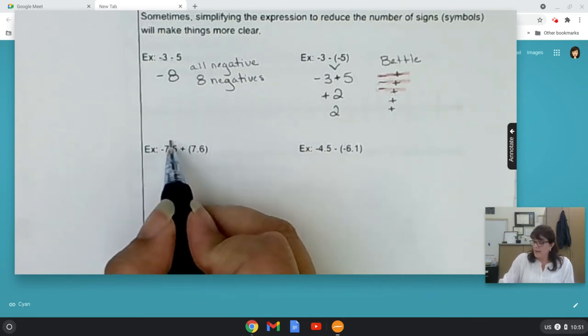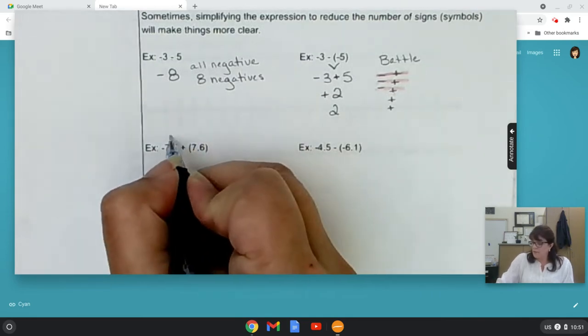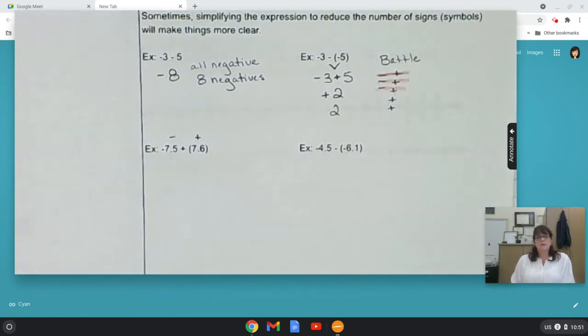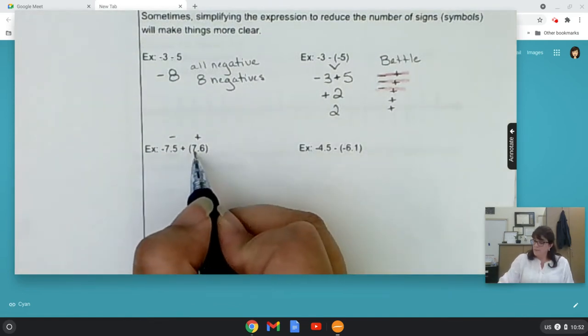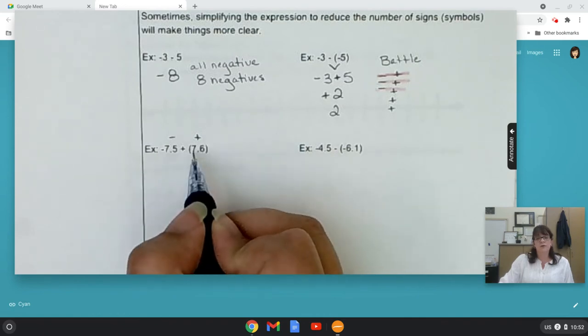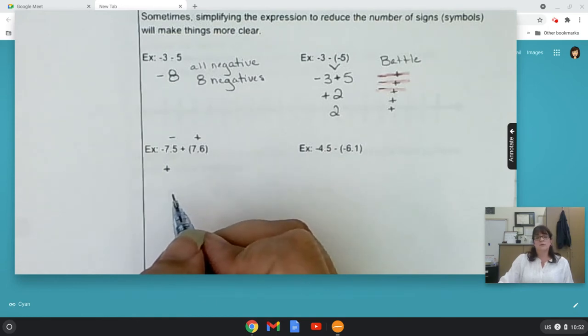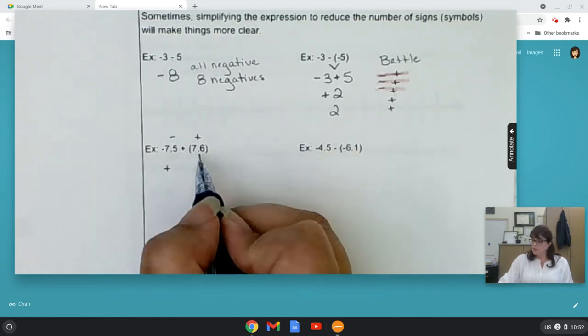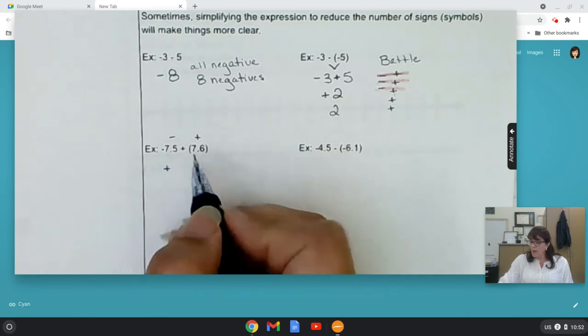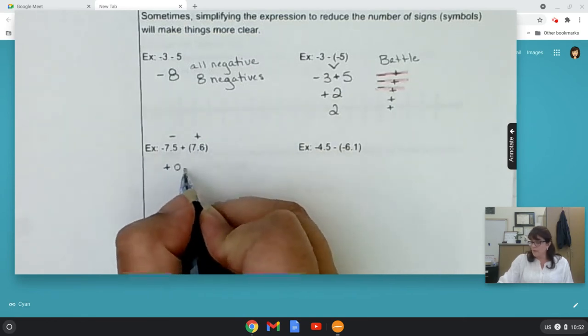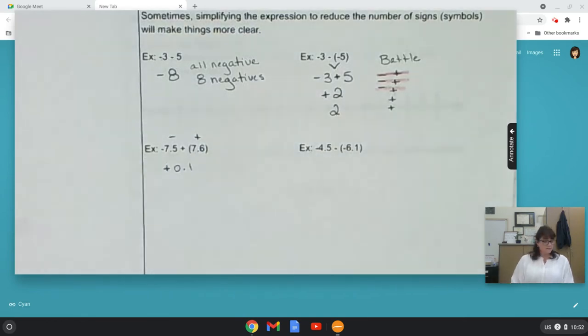I have negative 7.5 and positive 7.6. Negative 7.5, positive 7.6. My signs don't match. I have a battle. This is the bigger distance from zero. This is the bigger absolute value. So, I know my answer is positive. By how much? Well, this is .1 bigger than the other one. That's it. That's the whole biggie difference right there.